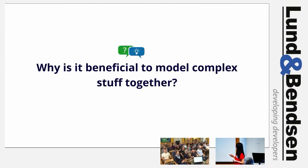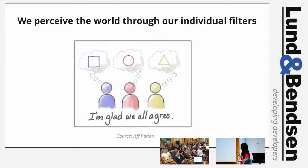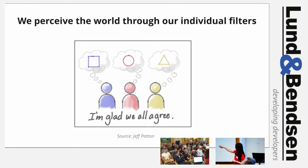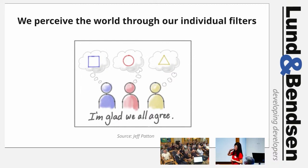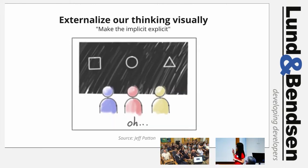Why is it beneficial to model complex systems together? We can only perceive the world through our individual filters. Consider three people who come out of the same meeting and say, 'I'm glad we all agree.' The blue person believes they agreed on a square. The red person is sure the consensus is about a circle. The yellow person is convinced they agreed on a triangle. With collaborative and visual modeling, what we want to do is make the implicit explicit — externalize all the assumptions, put them on a blackboard so we can have a conversation about them.